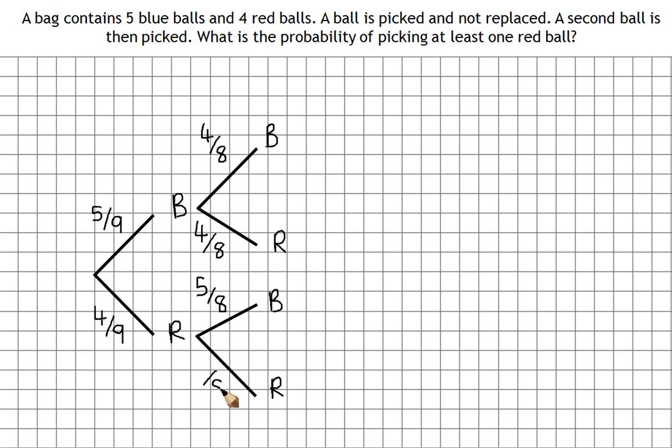Along here, eight balls left in the bag. We've already picked one red, so there'll only be three left. Okay, so you can see these probabilities along this branch, or these branches here, are now different.